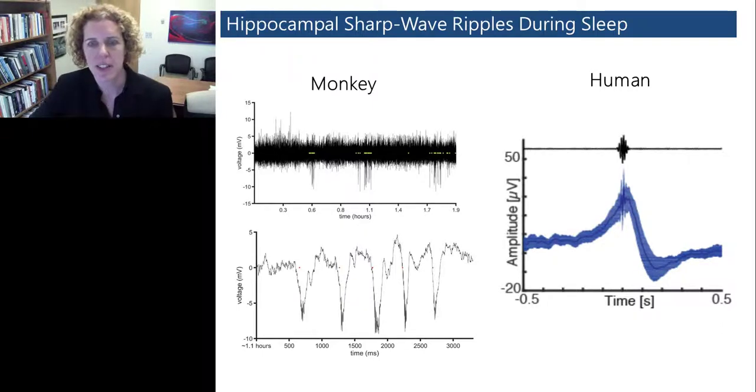On the left, you can see examples of these hippocampal sharp wave ripples recorded from a monkey during a rest period following task performance. On the right, you can see an example of sharp wave ripples recorded from a human epilepsy patient. This was also recorded during sleep.